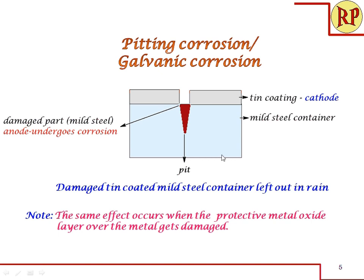We have already discussed this example in galvanic corrosion. When a damaged tin-coated mild steel container is left out in rain, the damaged portion acts as the anode because fresh mild steel is exposed there, while tin is coated all over the rest of the container. So the anodic area is very small and the cathodic area is very large — the situation of pitting corrosion. Corrosion occurs at the anode to satisfy the high electron demand of the large cathodic area, and a pit is formed.